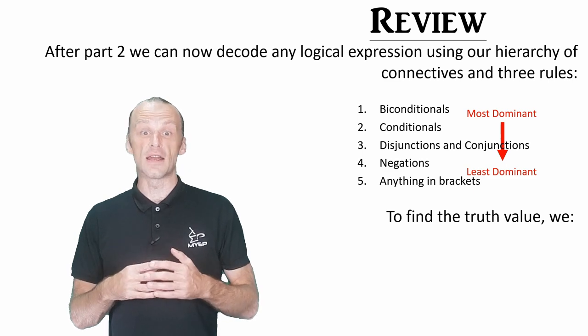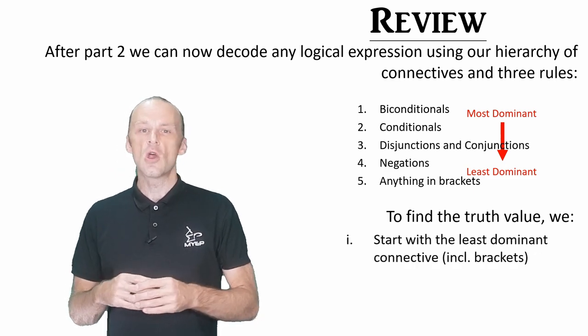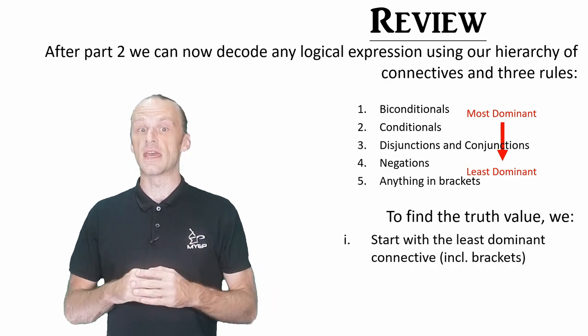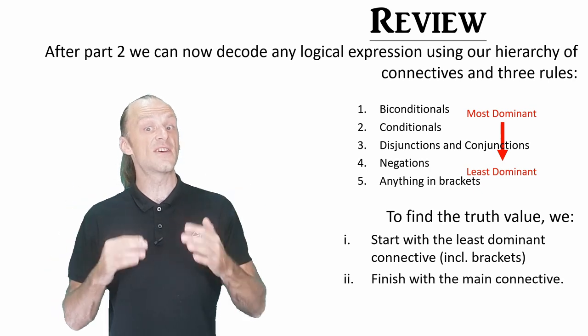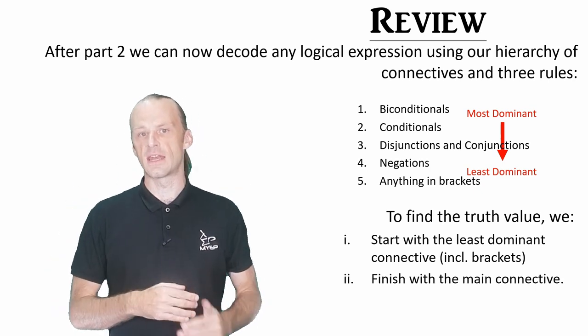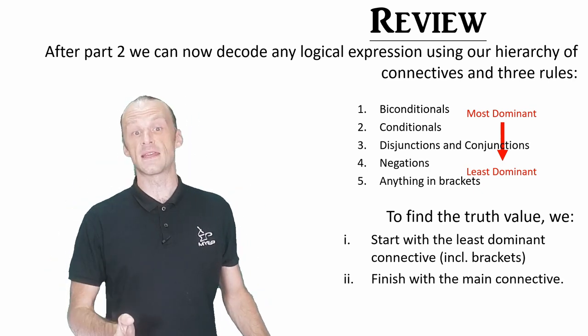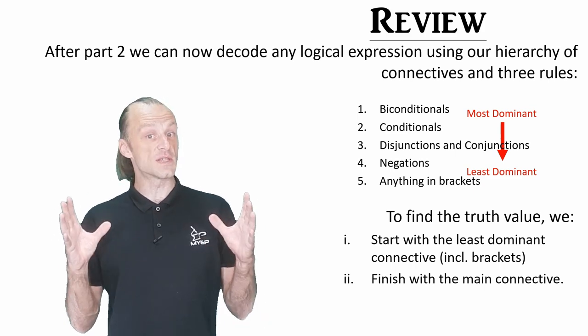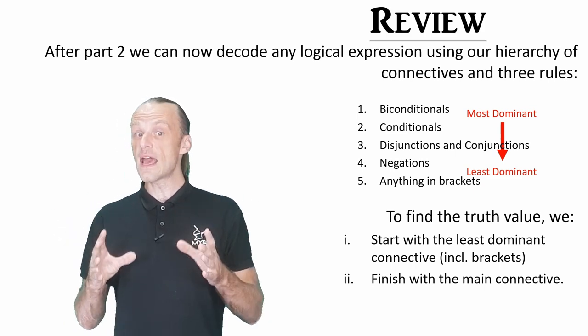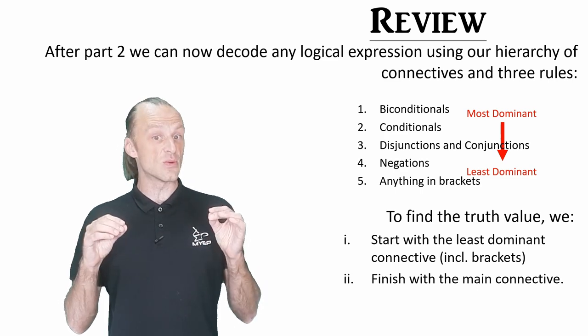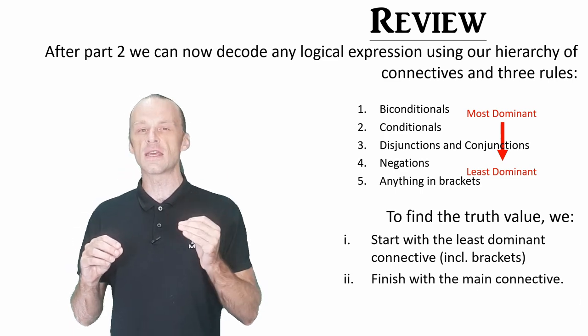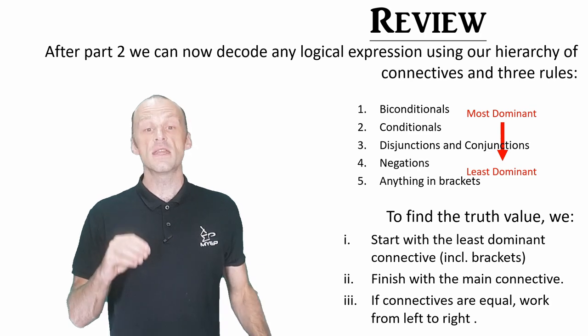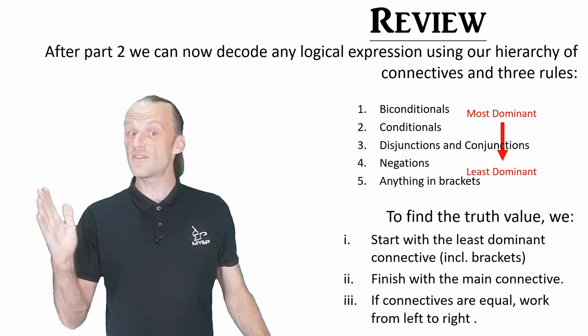To find the final truth value of a long compound statement, we start with the least dominant connectives, and work our way up to finish at the most dominant connective, which is called the main connective. This gives us the output of the whole expression. We should try to make our logical expressions unambiguous, but if you do find two connectives that have the same dominance, then the convention is to work from left to right.